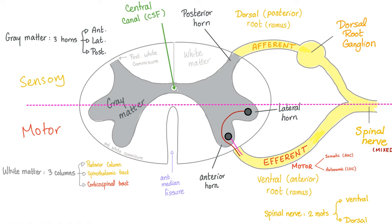In the spinal cord: draw the line in the sand. Anything behind is sensory, anything in front is motor. The dorsal ramus — it's behind the line, so it's sensory. The dorsal root ganglion — sensory, part of the afferent fiber. If I want to kick you — that's a motor function — it's the ventral or anterior ramus, in front of the line. The afferent and efferent meet in one bundle called the spinal nerves.